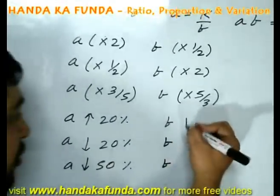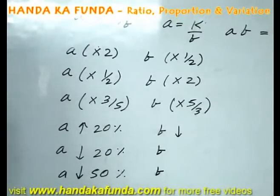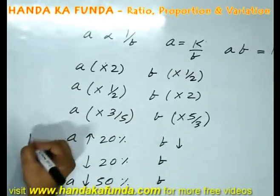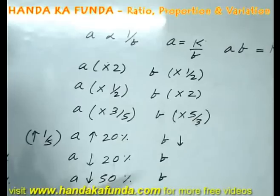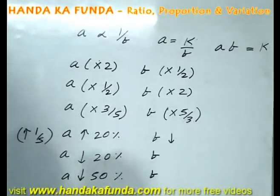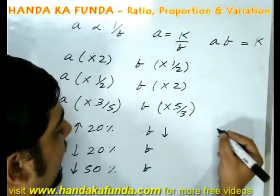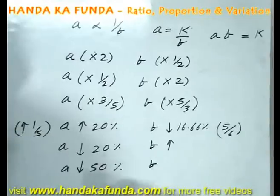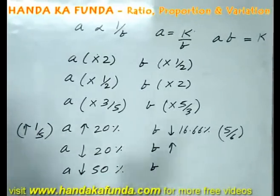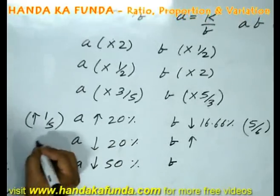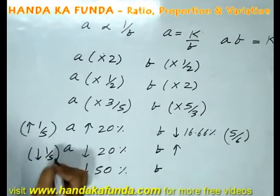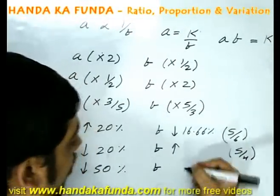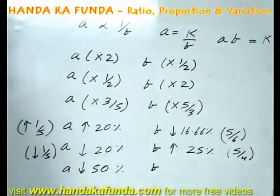If A increases by 20%, you know that B will fall. But how much will B fall? Will it fall by 20%? No. Say A increases by 20%. That means A increases by 1 fifth or A becomes 6 by 5 of the original. So if A is becoming 6 by 5 of the original, B will become 5 by 6 of the original or it will fall by 16.66%. If A falls by 20%, you know for a fact that B is going to increase. But by how much? You need to use the same idea again. Falling by 20%, that means falling by 1 fifth. That means it is becoming 4 by 5 of the original. So B will become 5 by 4 of the original or it will increase by 25%.